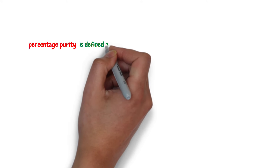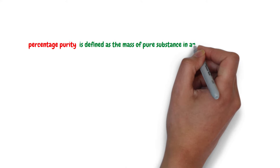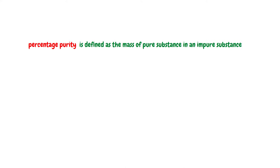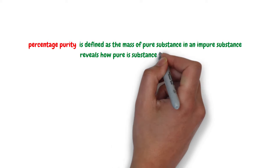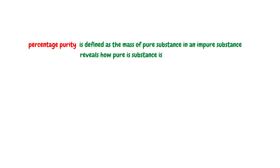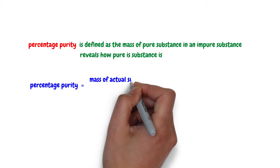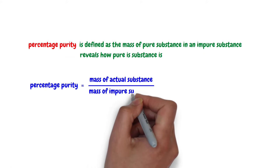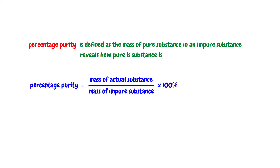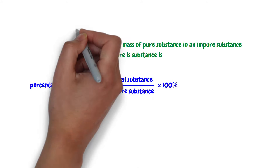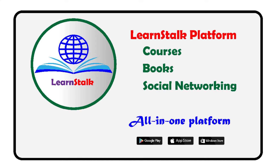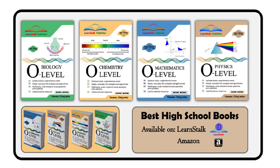To recap: percentage purity is defined as the mass of pure substance in an impure substance. The percentage purity reveals how pure a substance is. The formula for calculating the percentage purity of a substance is: percentage purity equals the mass of the actual substance over the mass of the impure substance, times 100%.